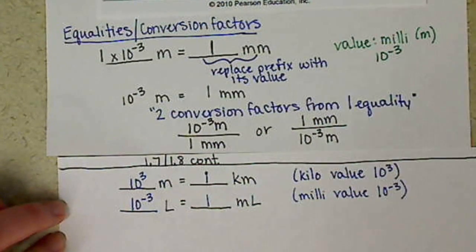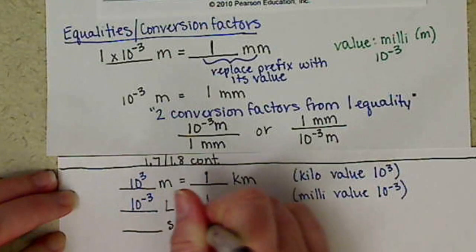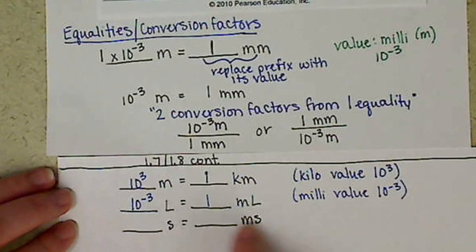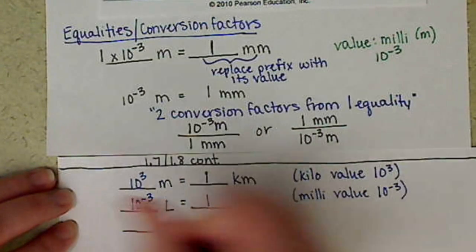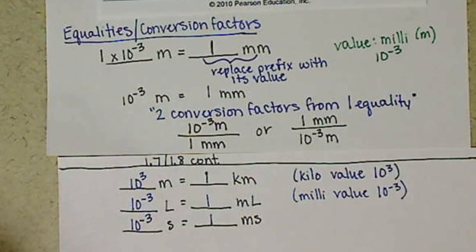So we can do the same thing if we say wanted to use the base unit for time, which is seconds. We have seconds and milliseconds. For every one millisecond, we have 10 to the negative 3 seconds.